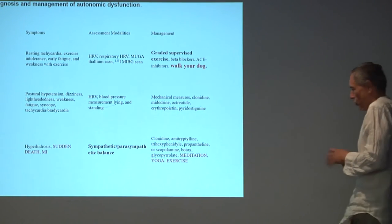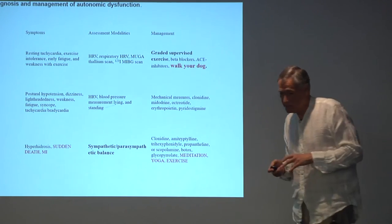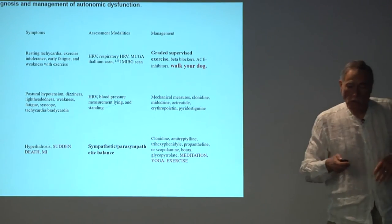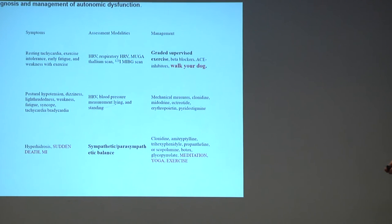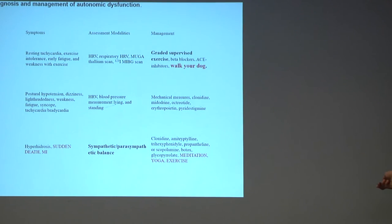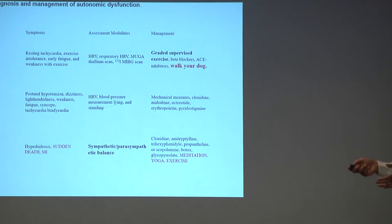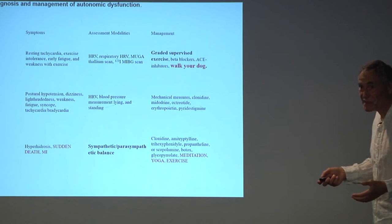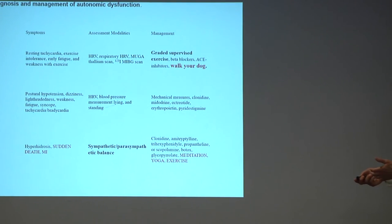Meditation, yoga, exercise, and walking your dog all improve sympathovagal balance. There's an interesting study done in little old ladies where walking did improve their heart rate variability. If they walked their dog, it improved even more. If you took the dog away from them while they were walking, their heart rate variability decreased. So exercise is good, walking with your dog is better, and if someone takes your dog away, you lose some of the benefit.